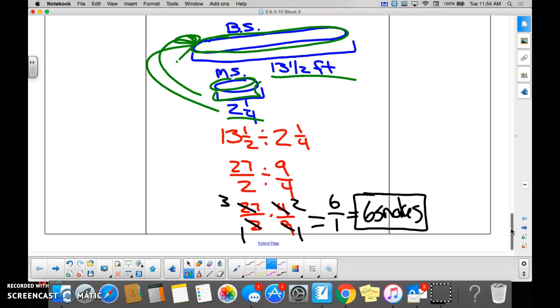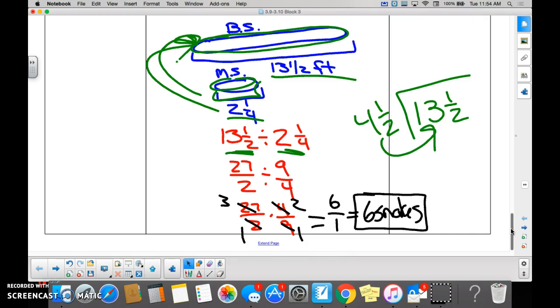Six. Six, but we took thirteen and one-half and we divided by two and one-fourth. And remember that second number is the number that goes into the first number, right? So technically if I were going to use a division box, would it be thirteen and one-half divided by two and one-fourth? Yes. And how many of these go into that? You guys said that it was six. Six. Any questions?